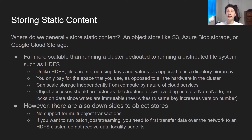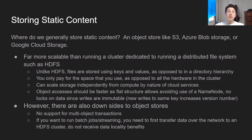Before diving into CDNs, let's talk about storing static content in general. Whenever you're dealing with storing static content in a systems design interview, you should always say you're going to use an object store. Object stores are something like AWS S3, Azure Blob Storage, or Google Cloud Storage. The reason to use an object store over a distributed file system like HDFS is mainly that it is going to be much cheaper, much more scalable, and potentially even faster.